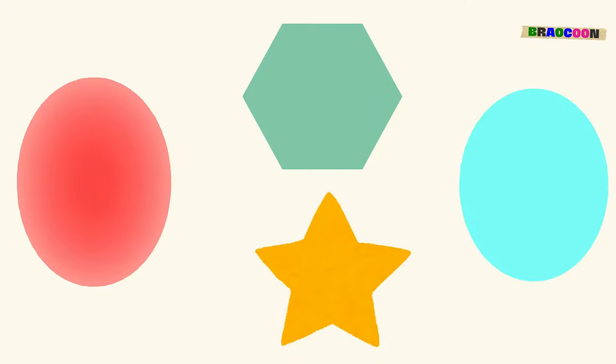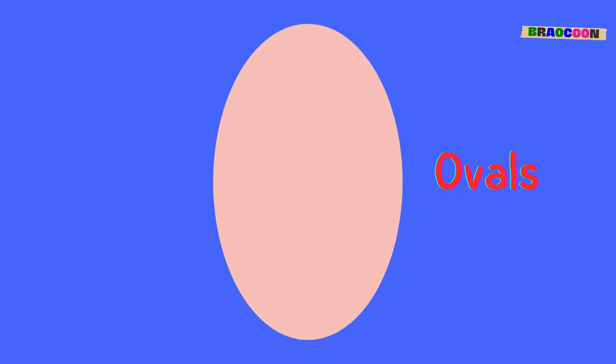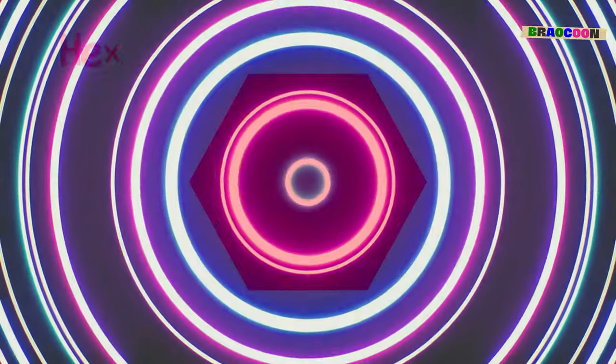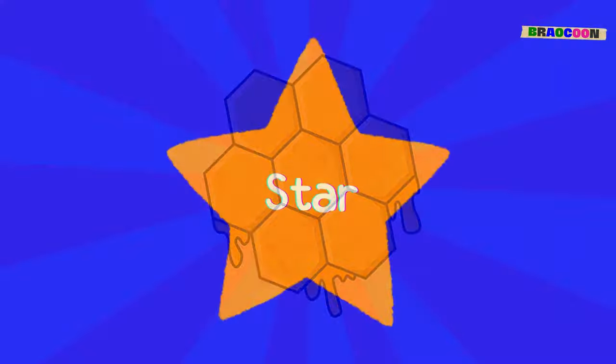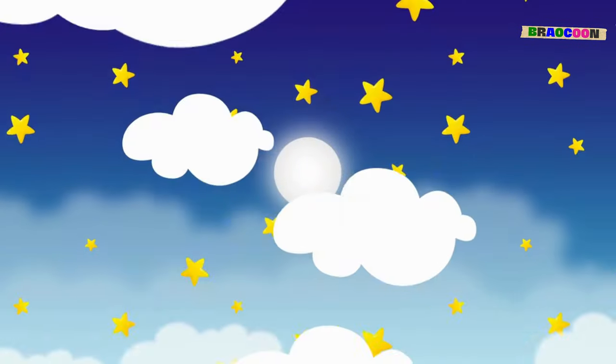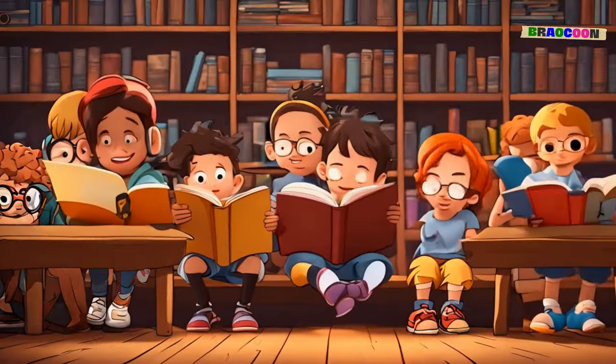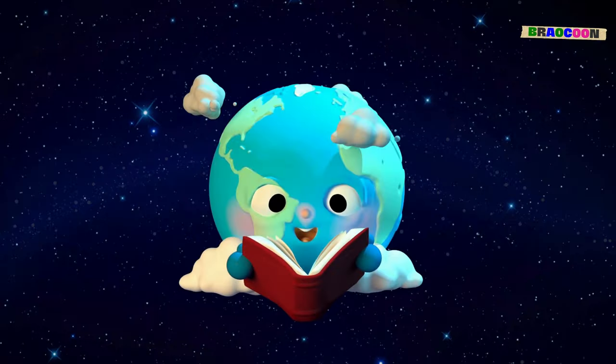There are other 2D shapes that exist, like ovals, which are like stretched-out circles, hexagons, which have six sides just like a honeycomb, and stars, which light up the night sky. Each shape tells a story and fits into our world in its own way.